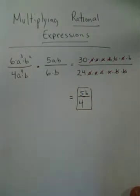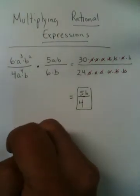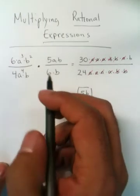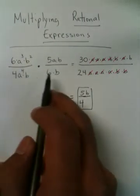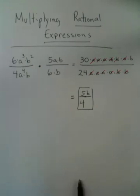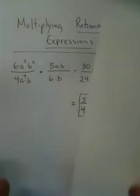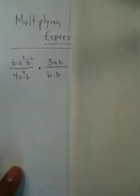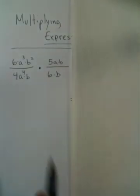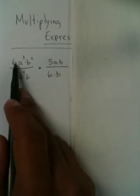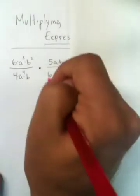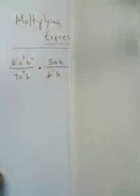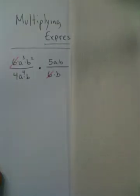Now I'd like to show the shortcut method for this problem. What you would do is, since everything's being multiplied together — I'm going to cover this side up to help keep our thoughts clear. You can see everything's being multiplied together. So 6 will cross out with a 6 because they're whole values — 6 divided by 6 is 1.